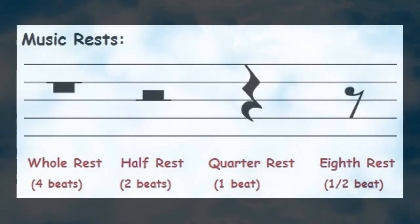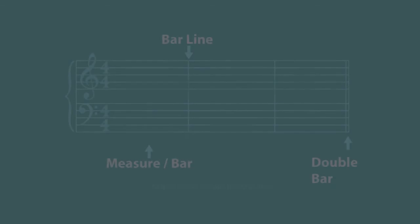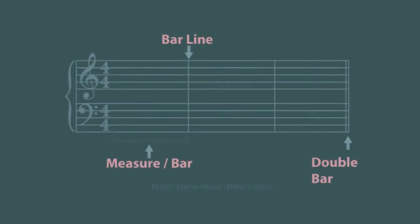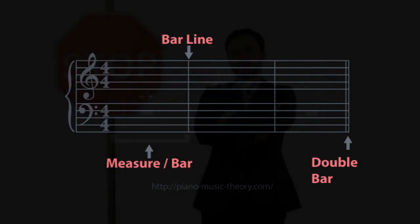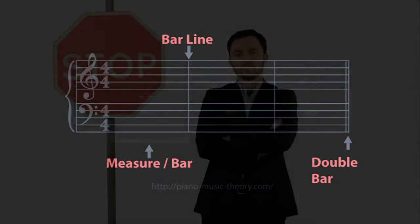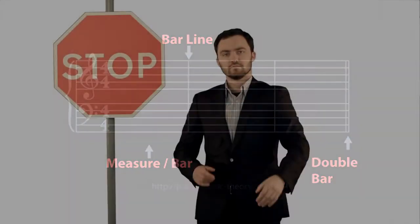Music is divided into equal parts by bar lines. The area between the two bar lines is called a measure or bar. A double bar line is written at the end of a piece of music to signify that the piece is over.